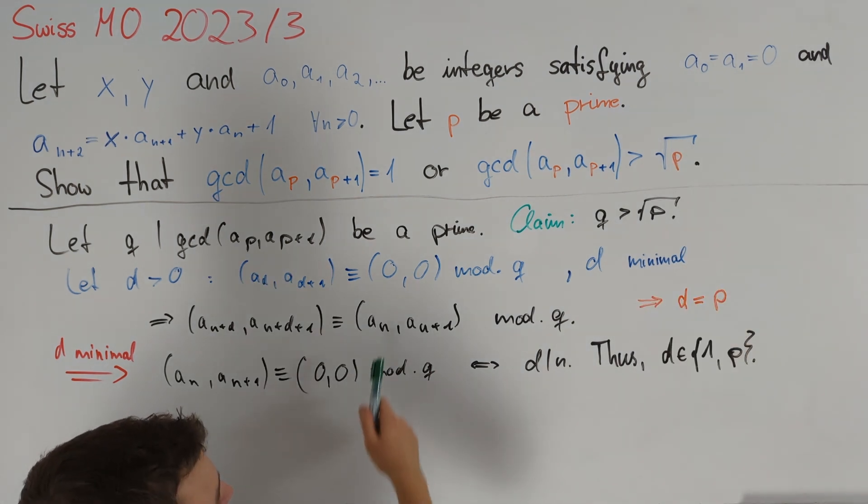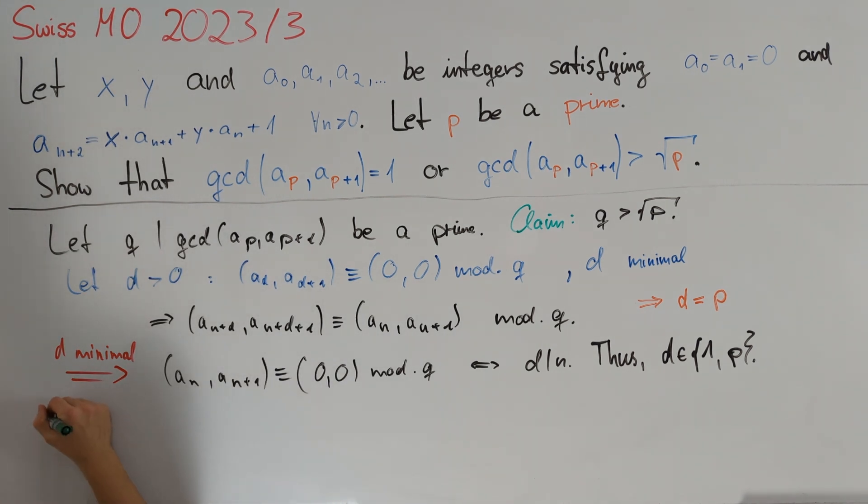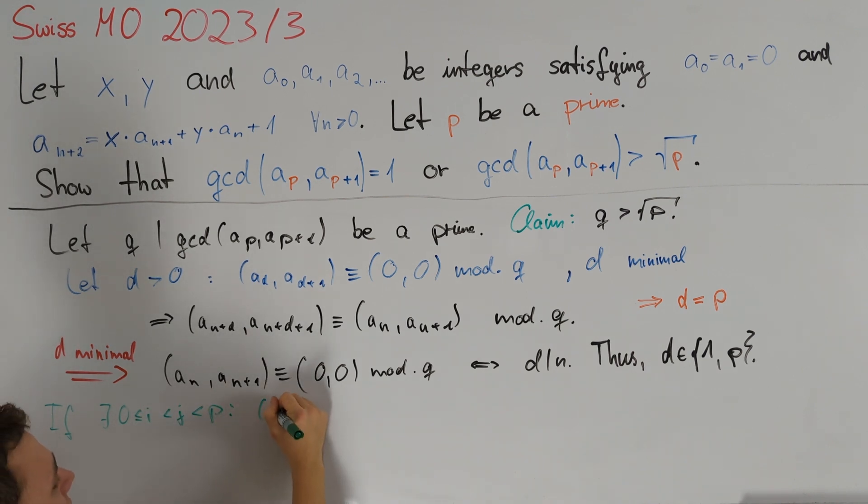We know that the sequence of pairs modulo q has minimum period d equal to p. To use this fact in order to get a bound on p we will assume that we can find indices 0 ≤ i < j < p such that (aᵢ, aᵢ₊₁) is congruent to (aⱼ, aⱼ₊₁) modulo q.